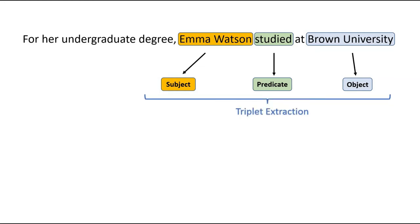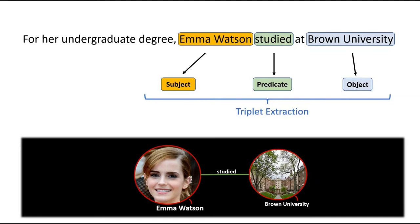The task of identifying the subject, predicate, and object in a sentence is a very common NLP task called triplet extraction, where the triple refers to the subject, predicate, and object. There are excellent automatic triplet extractors available that, given a passage of text, identify all the triples present. This falls into the general area of information extraction. Here we focus on open information extraction, where the relationship is not constrained to a predefined list and is typically just an extract from the input sentence.